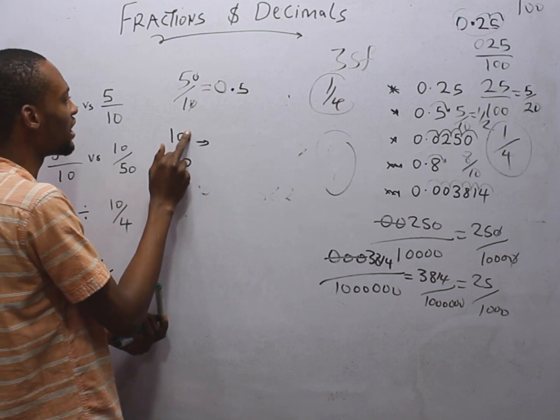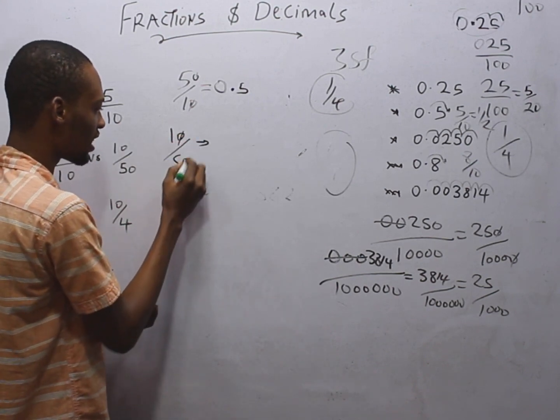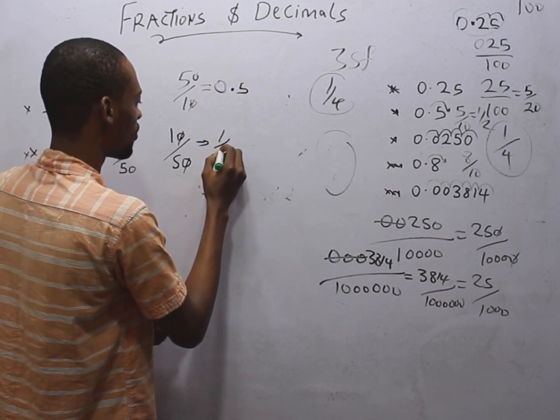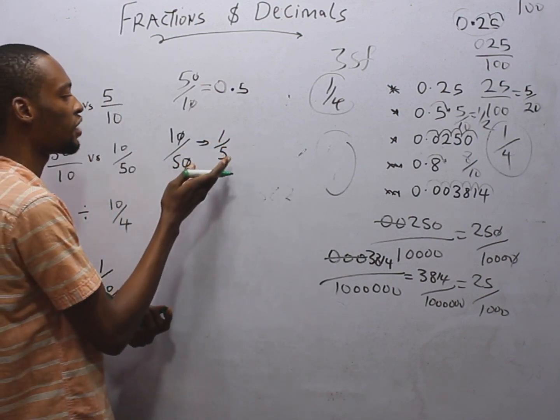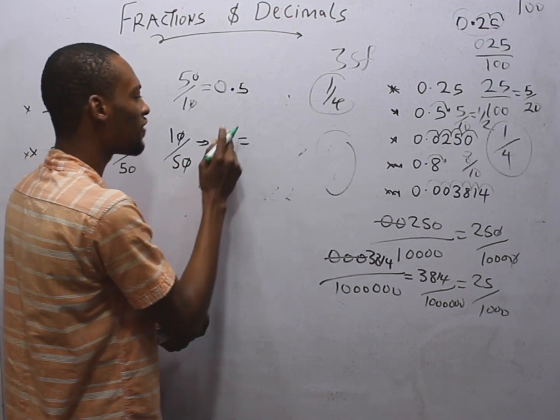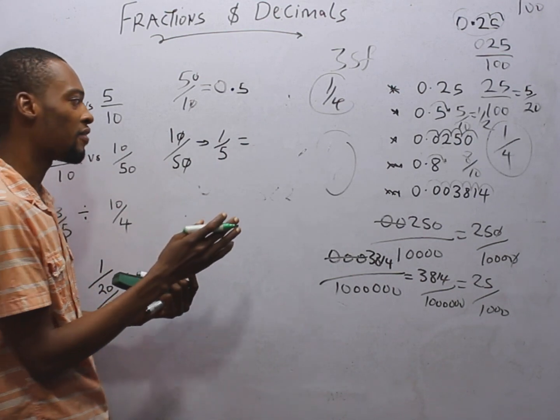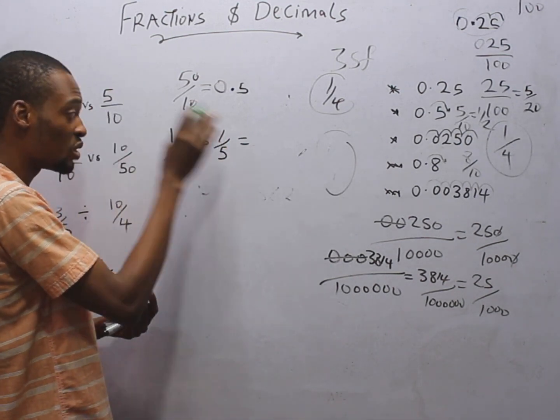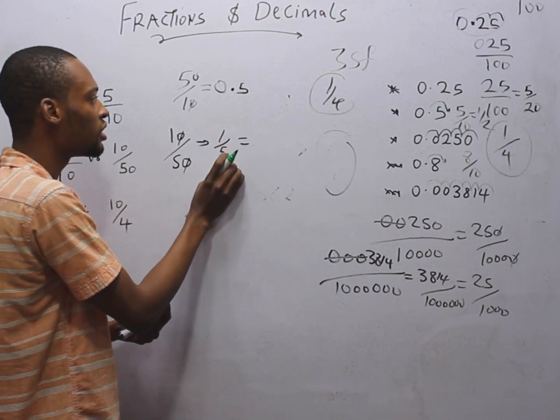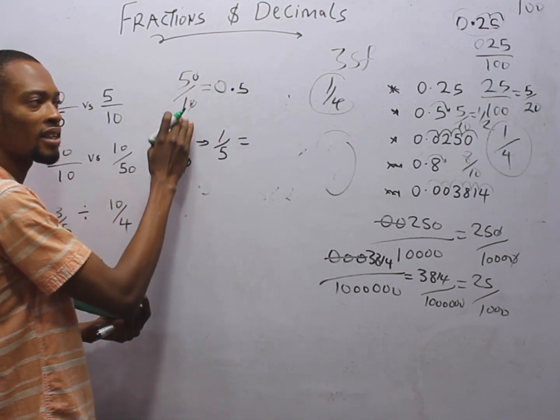We look at this. 10 divided by 50. We can simply say there is 0 here and there is 0 here. So this can cancel this to give us 1 over 5. We can do that. If it is 1 over 5, 1 divided by 5 will certainly have 0 because 1 is less than 5. This is a proper fraction.